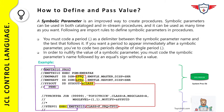The beauty of symbolic parameters is that you can write procedures in a more generic way and reuse them across multiple jobs by only changing the symbolic parameter values. For example, if a production job needs to run in a test environment, simply get a copy of the job, change the symbolic parameters to match the test environment, and run it. It is always recommended to use symbolic parameters when writing procedures.